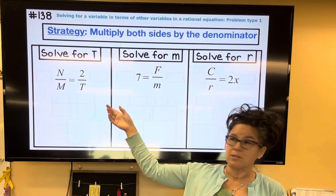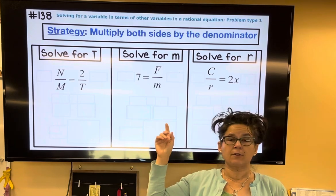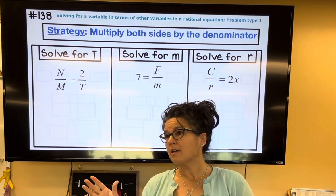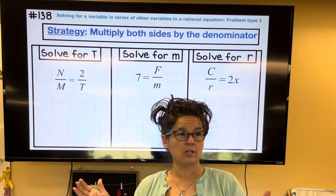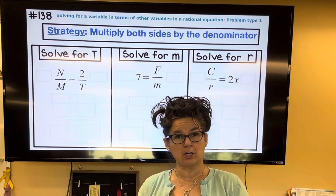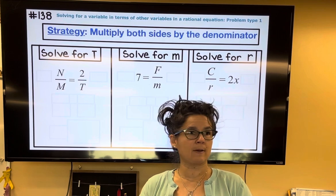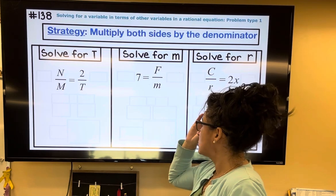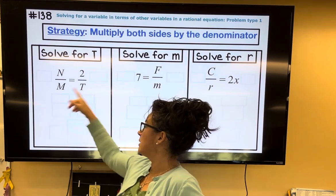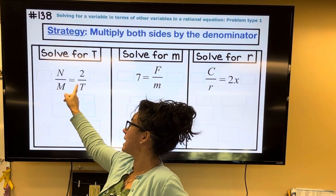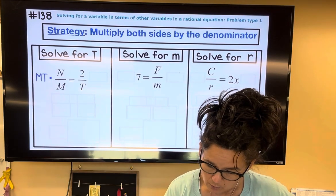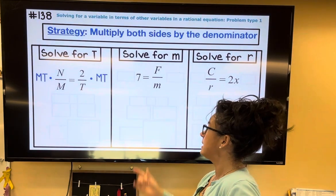There are many ways that we can solve these different equations for the given variable, but I'm going to stick with the mantra that anytime the equation in front of you has a fraction, multiply both sides by the denominators, and then relook at it. In this one right here, I have denominators m and t, so I'm going to multiply both sides by m and t.